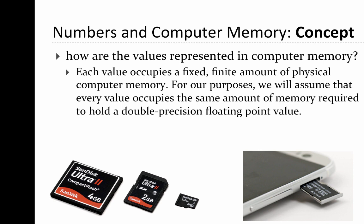Conceptually, we are putting numbers into memory, and each of those numbers takes the same amount of space. Each memory chip can only hold so much — for instance, one can hold 2 gigabytes, another 4 gigabytes, and another 32 gigabytes of data. Depending on how precise we want to be, the space occupied by each number will be more. Double precision takes up more space than, say, a single precision floating point number.